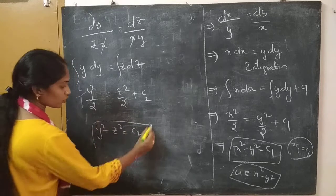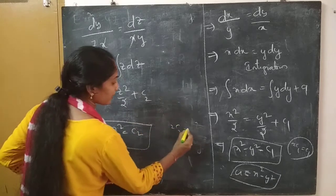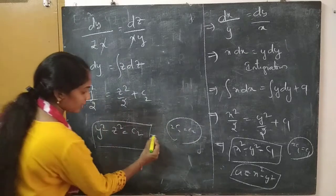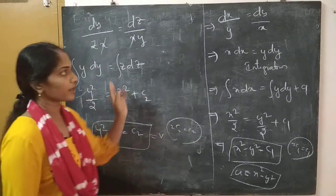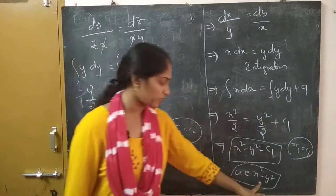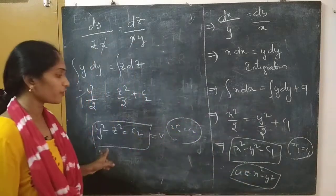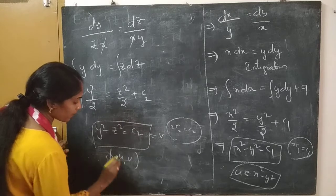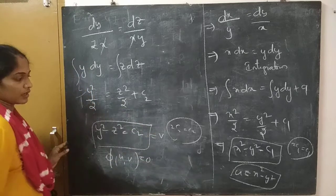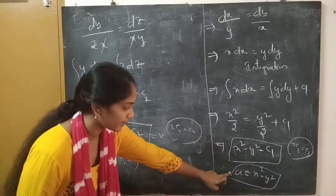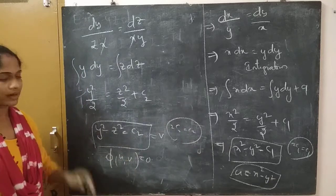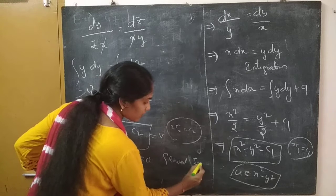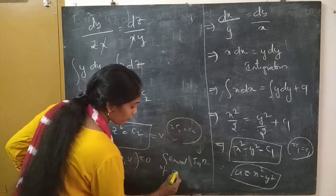Now take the second and third fractions: dy/(zx) = dz/(xy). Here x cancels, leaving y dy = z dz. Integrating both sides: y²/2 = z²/2 + c₂, which gives y² − z² = c₂. So this is another independent solution: v = y² − z².